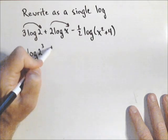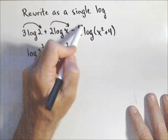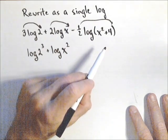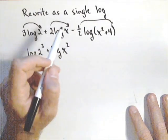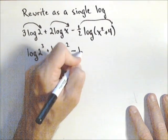The exponent's going to go up front, so we have log of x squared. And this one's going to go up front. Now you could put it up there as a negative one half and change this to a positive, or just put it up as a one half and leave it as minus.